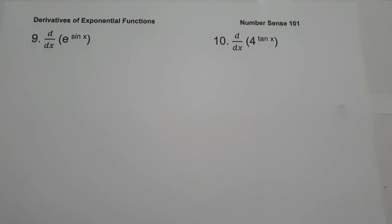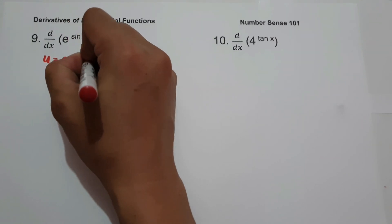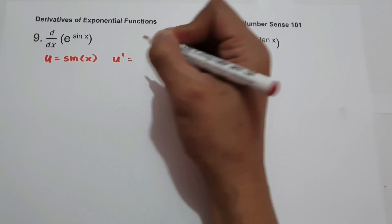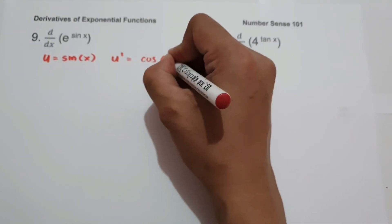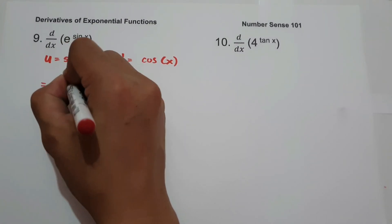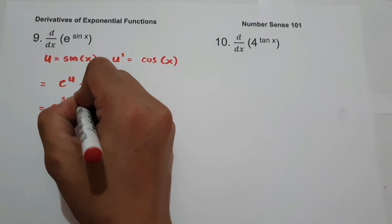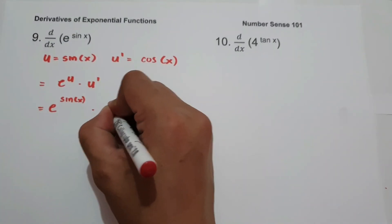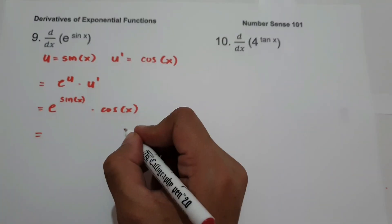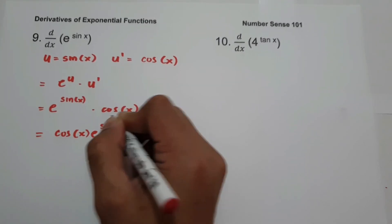On the third set of examples, we have u as a trigonometric function. For number 9, what is the derivative of e raised to sine x? The value of u is sine x, and u prime, the derivative of sine x, is cosine x. Applying the formula: e raised to sine x multiplied by cosine x. Our final answer is cosine x times e raised to sine x.